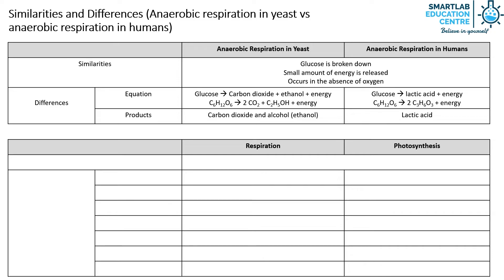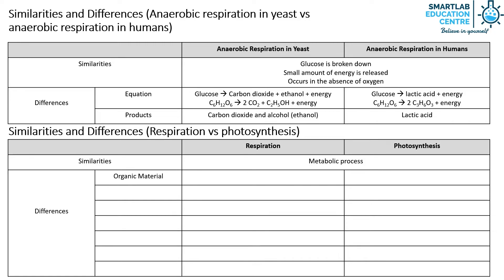Lastly, we will compare the similarities and differences between respiration and photosynthesis. Both respiration and photosynthesis are metabolic processes. However, respiration is a catabolic process, whereas photosynthesis is an anabolic process. Respiration occurs in all living cells, but photosynthesis can only occur in cells that contain chlorophyll.